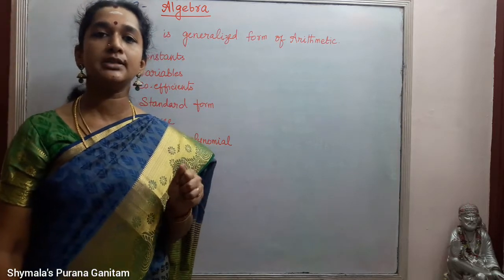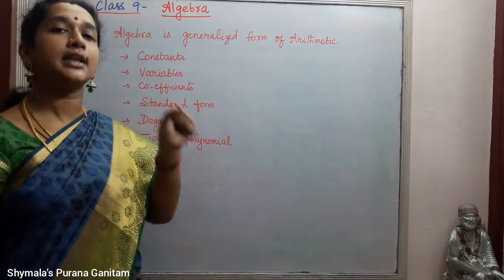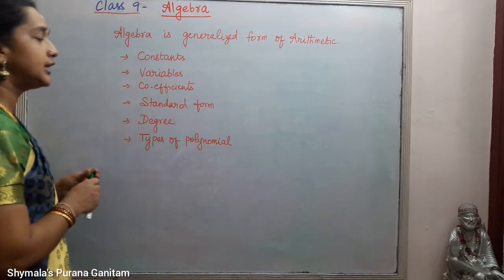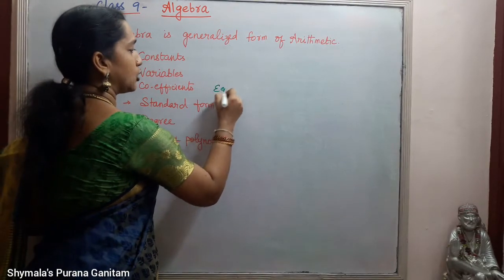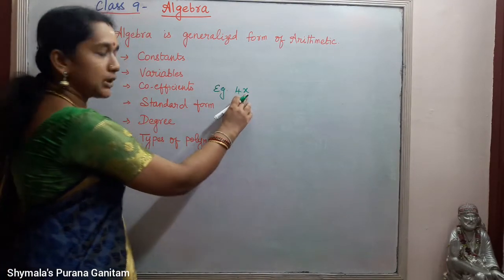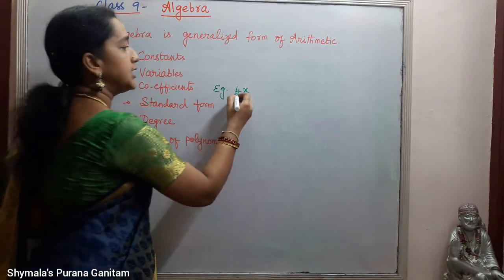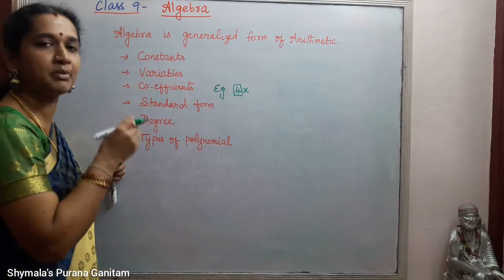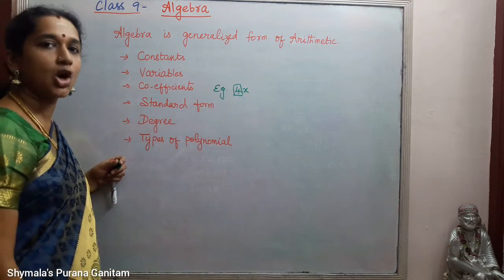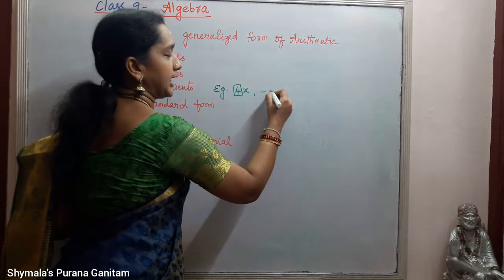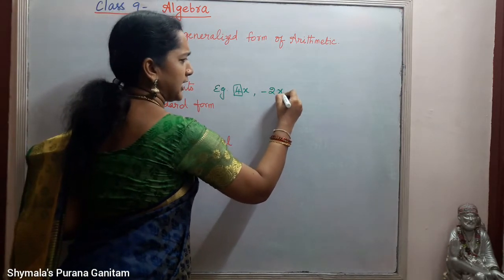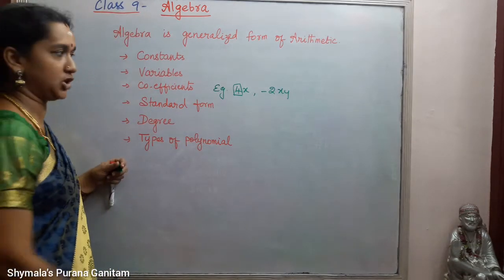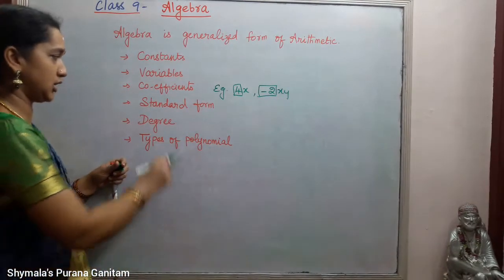Next is coefficient. Coefficient means the constant — that is the number — placed before a variable. That is called coefficient. For example, if we take 4x, x is the variable and 4 is the constant. This 4 that is placed before the variable is called coefficient. It can be a positive or negative number. For example, in minus 2xy, for the variable xy, minus 2 is the coefficient.